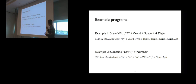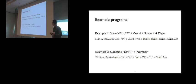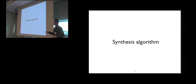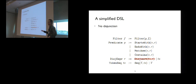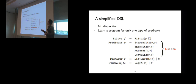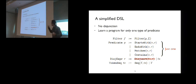Now let's look at the synthesis algorithm. I'll focus on a simplified DSL with no disjunctions, and assume we are learning a program for only one type of predicate — so the predicate is given and the learning task is just to learn the token sequence. The algorithm takes a set of positive and negative examples and learns an expression E using the given predicate that is consistent with all examples — matching all positive examples but none of the negative ones.